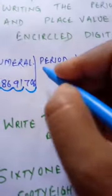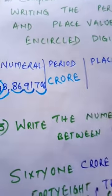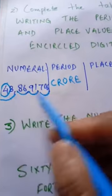So period of 4 is crore. What is the place of 4? Let's start.